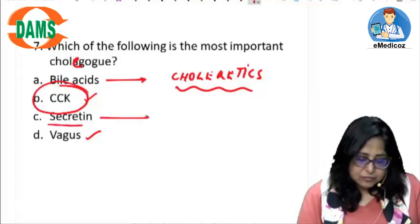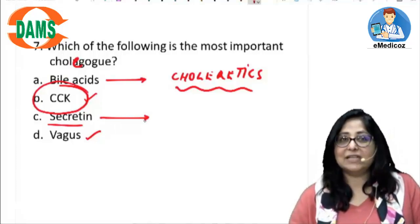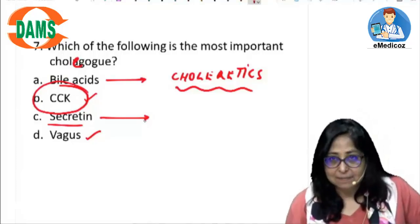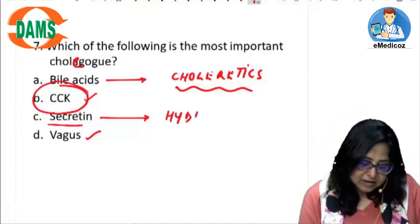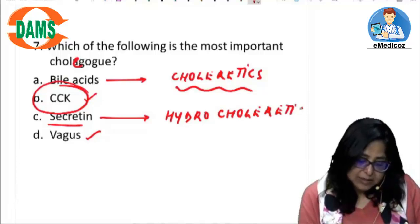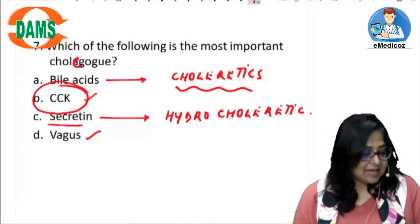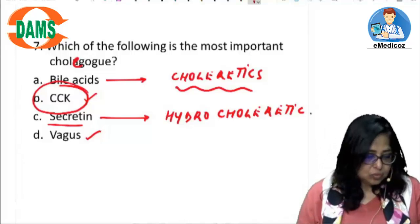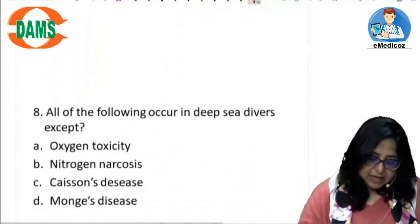What is the role of secretin? Secretin increases the bicarbonate content, and therefore the water content, in bile. It is therefore known as a hydrocholeretic — it increases the bicarbonate and water content in bile.